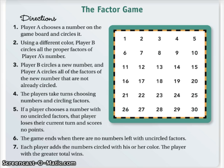Then it's Player B's turn — Player B circles a number and Player A circles all of the factors of that new number. Players take turns choosing numbers and circling factors. If a player chooses a number with no uncircled factors, that player loses their current turn and scores no points. So that's when you have to be careful about what numbers you're choosing.